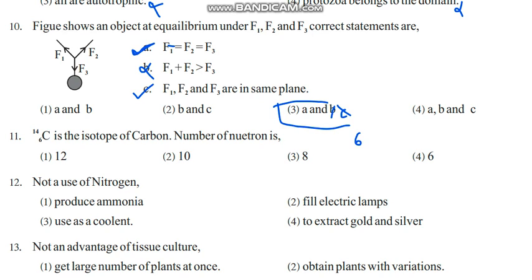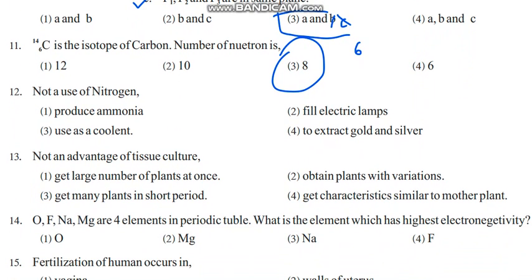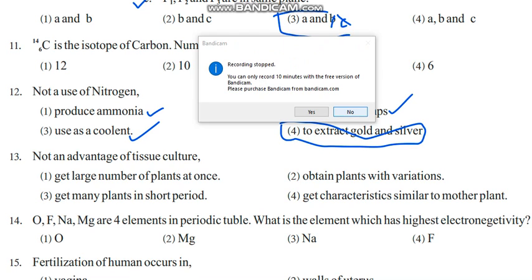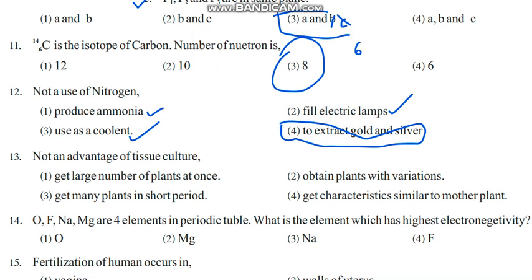Not a use of nitrogen: nitrogen is used in production of ammonia, to fill electric lamps, use as a coolant, to extract gold and silver. That last one is not nitrogen, it should be sodium. Not an advantage of tissue culture: get large number of plants at once - that is an advantage. Get many plants in short time - also an advantage. Get characteristic - also an advantage. Not an advantage is obtained plants with variation, because all plants are identical to mother plant in tissue culture.